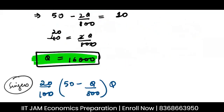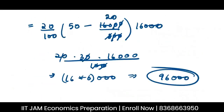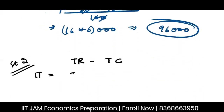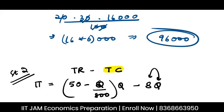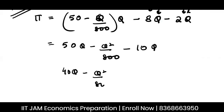Now let's take situation 2. The singer gets ₹2 per album sold, so if Q albums are sold the singer gets 2Q. The profit function of the firm is total revenue minus total cost. Total revenue is (50 − Q/800) × Q. Total cost has two parts: production cost 8Q and the singer's payment 2Q. So profit = 50Q − Q²/800 − 10Q = 40Q − Q²/800.